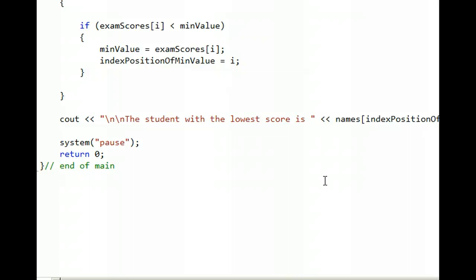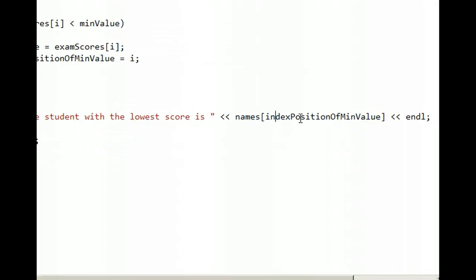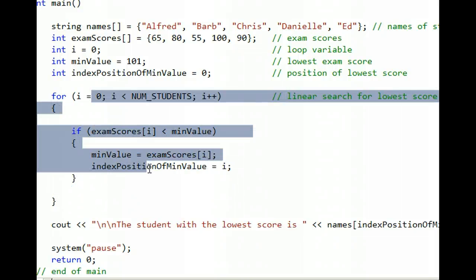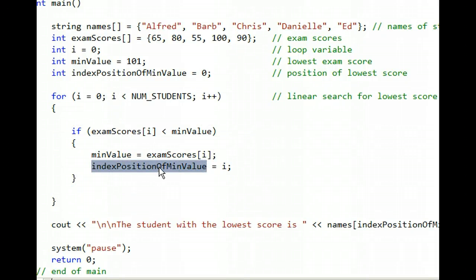So this last cout statement down here prints out names, square brackets, 2. At this point in the program, the variable indexPositionOfMinValue is 2. When this for loop executes, just trust me that indexPositionOfMinValue ends up being 2.